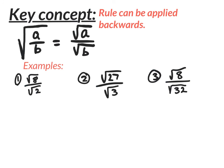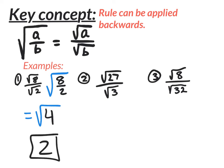This rule of splitting the root to the numerator and the denominator can also be applied backwards when it benefits you. For example, we have the square root of 8 over the square root of 2. You could simplify the square root of 8 and get rid of the square root of 2 by multiplying, but that's a lot of work. It's easier to go backwards — if you have two separate roots, you can put them together underneath one root and divide the values A and B on the inside. So for number 1, I put one single root with 8 divided by 2 inside. Eight divided by 2 is 4, so you have the square root of 4, which is 2.